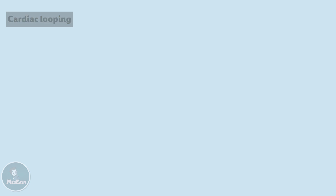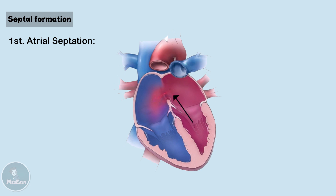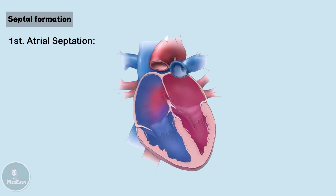After cardiac looping, the heart begins to form septa to establish the four-chambered structure that we all know. In atrial septation, septum primum grows downward from the roof of the primitive atrium towards the endocardial cushion. The space left between these two structures is called ostium primum. Ostium is Latin for door, meaning an opening. In the center of septum primum, a second ostium called ostium secundum begins to form as a result of cell death.